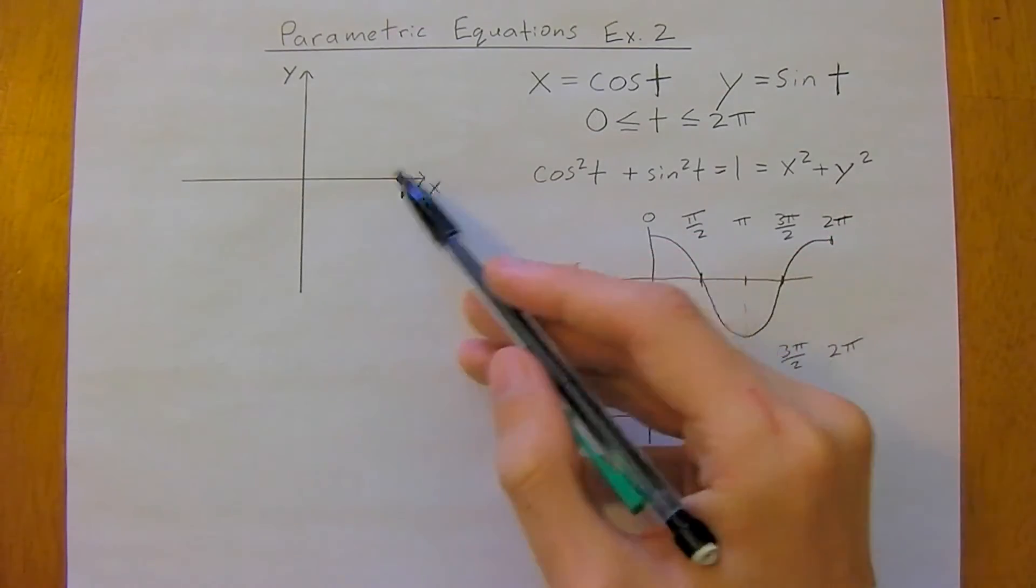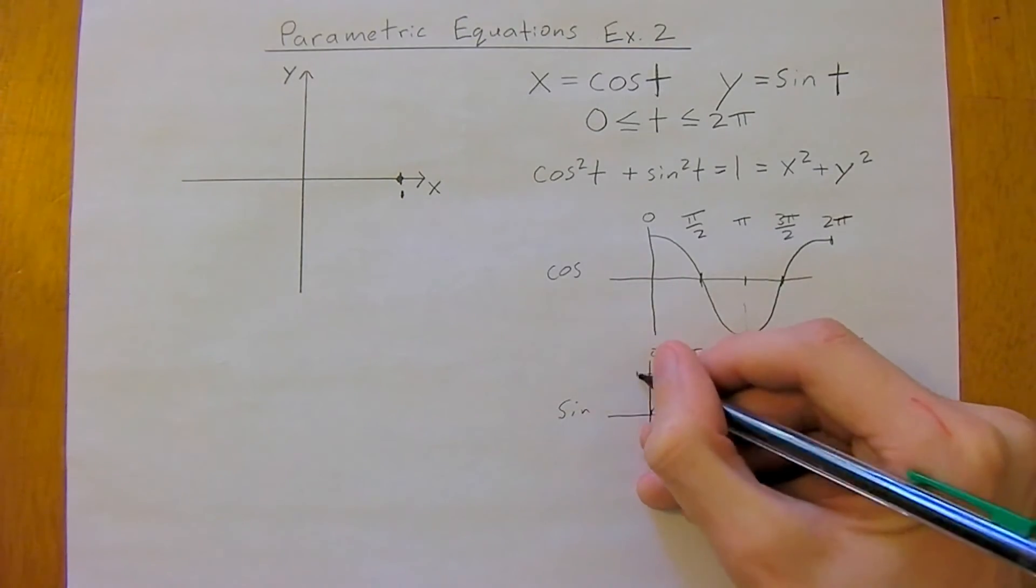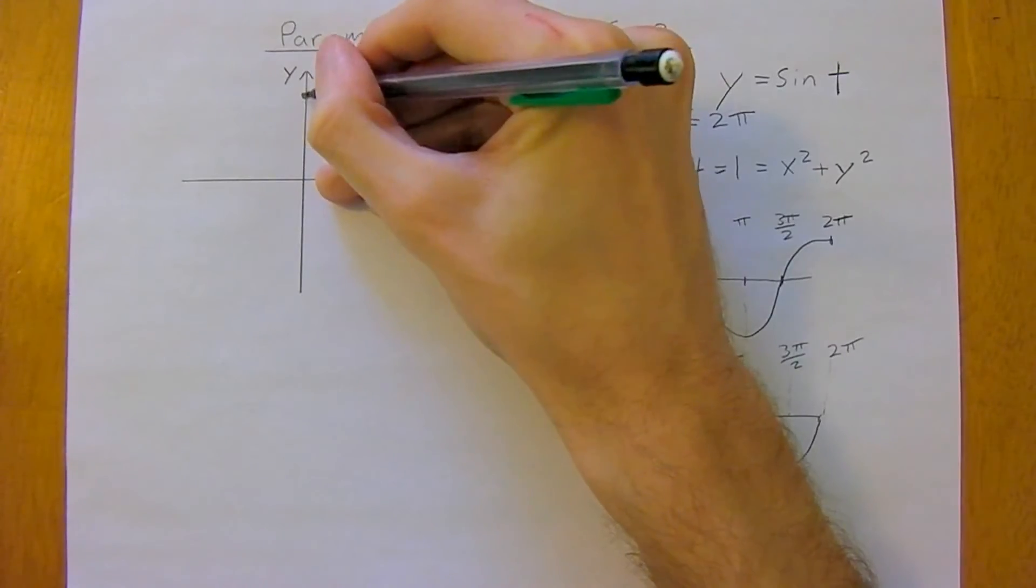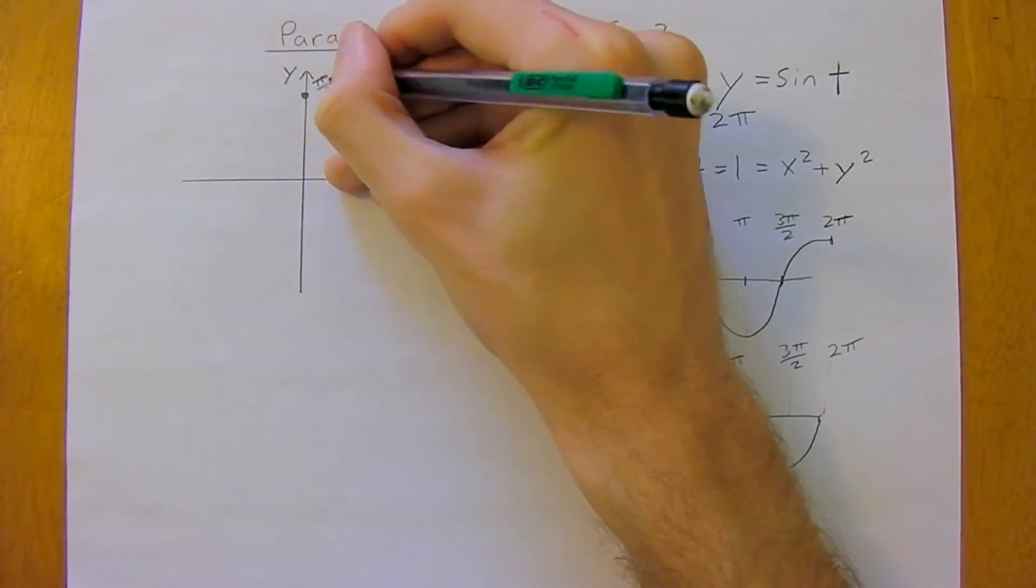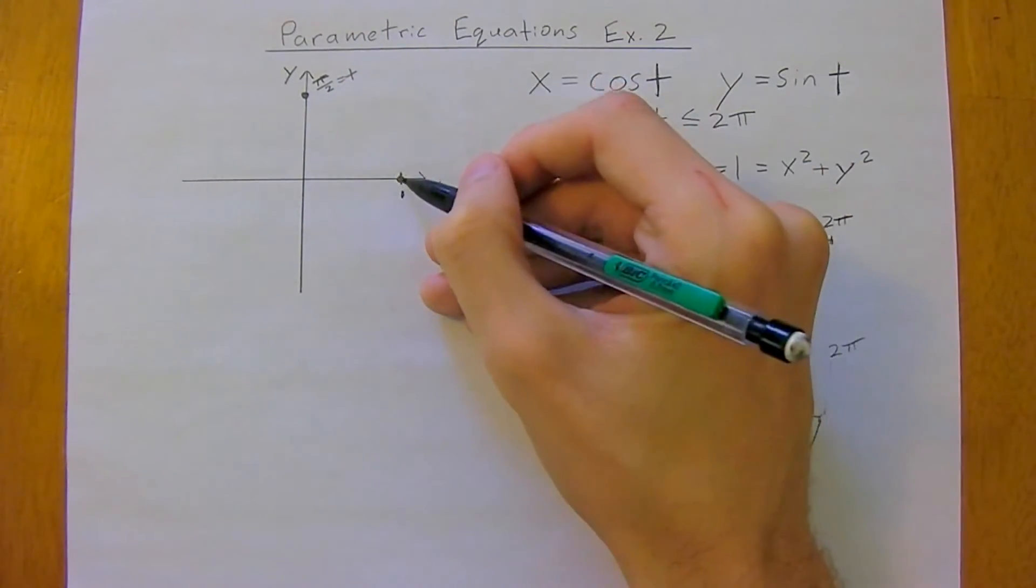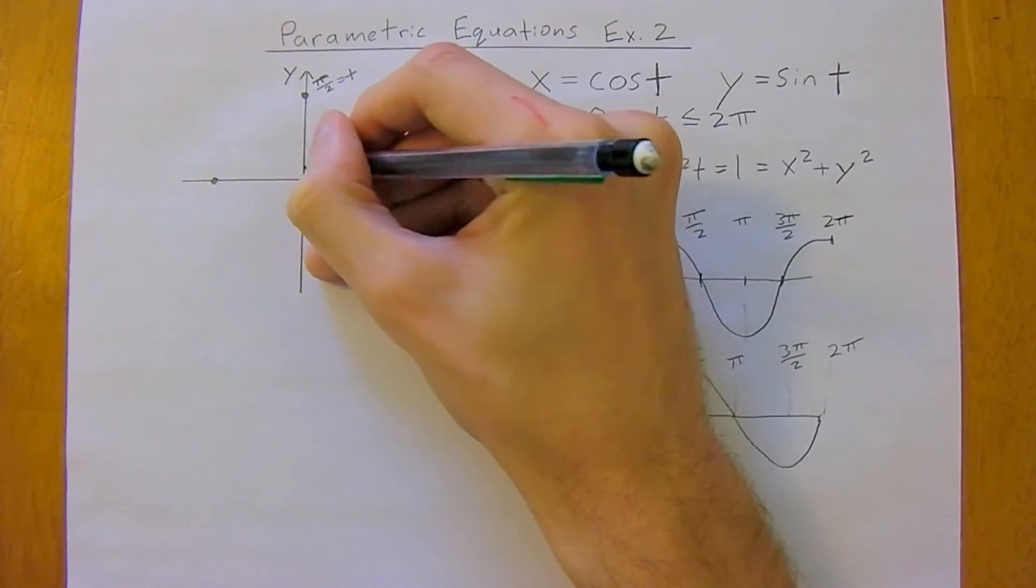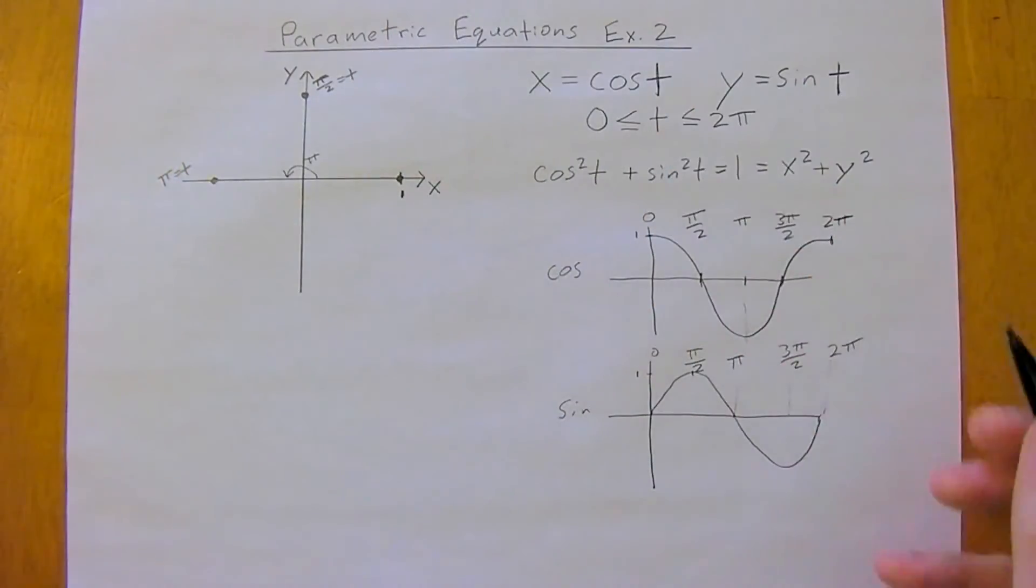And then at cosine 2 pi, x is going to be 0, but sine is actually going to be at 1. So we're going to be up here now, at pi over 2 is equal to t. Then at pi, we're going to be at, so this distance here is pi, so at t equals pi.